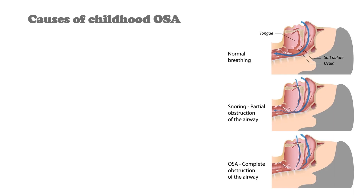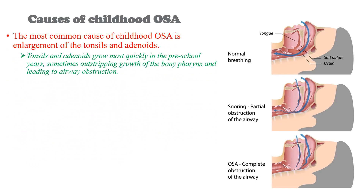The most common cause of childhood obstructive sleep apnea is adenotonsillar enlargement, or adenotonsillar hypertrophy. Tonsils and adenoids grow most quickly in the preschool years, sometimes outstripping growth of the bony pharynx and leading to airway obstruction. Because of this rapid growth of tonsils and adenoids during young age, OSA is common from 2–8 years of age.